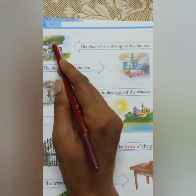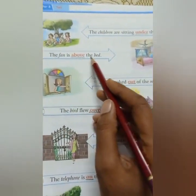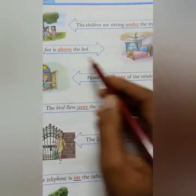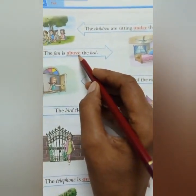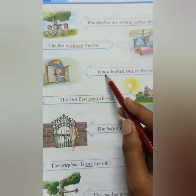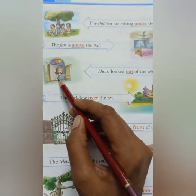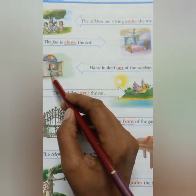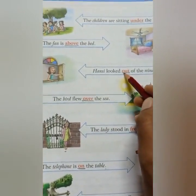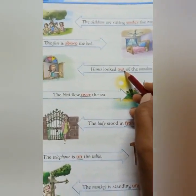Children are sitting under the tree. Next: the fan is above the bed. 'Above' is telling about the position of the fan. Next: Hansi looked out of the window. Hansi is a girl, and 'out' is telling about the position where the girl is looking.